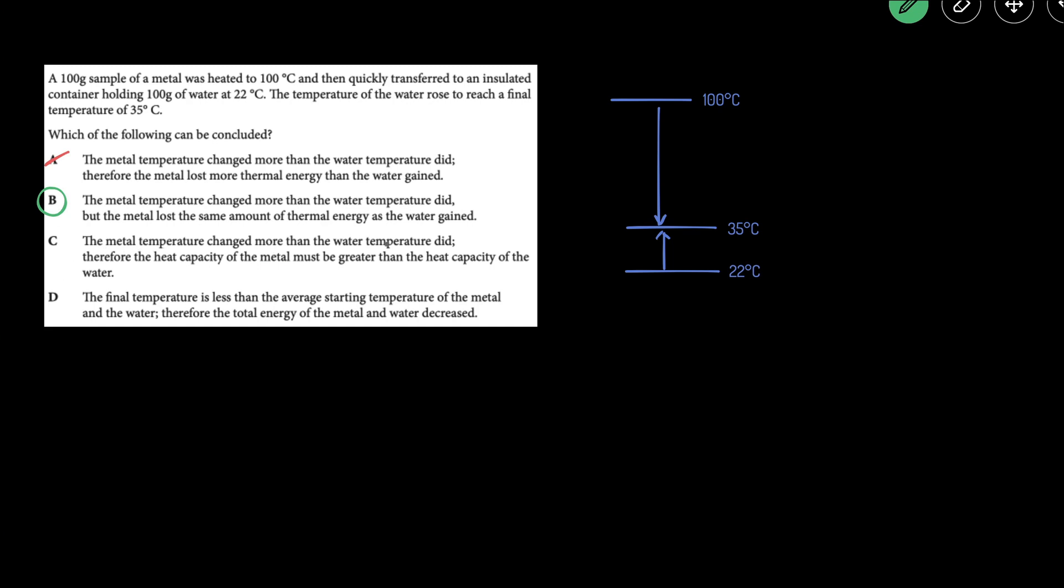The metal's temperature changed more than the water's temperature did. Looking good. Therefore, the heat capacity of metal must be greater than the heat capacity of water. That one's incorrect because water's heat capacity is 4.184, whereas metal's is usually just less than 1. So we can get rid of that.